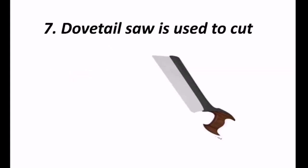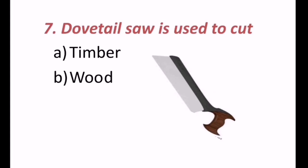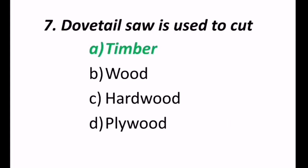7th question reads, Dovetail saw is used to cut. So dovetail saw, we can see in this figure, it is used to cut, may be timber, or wood, hardwood, or plywood. The correct answer is timber. Dovetail saw is used to cut timber. A is the correct answer.